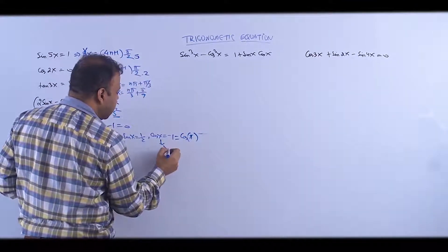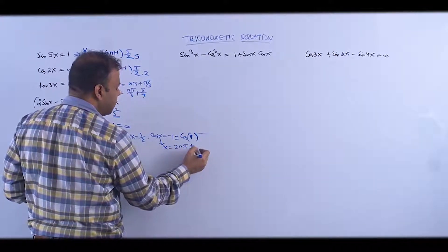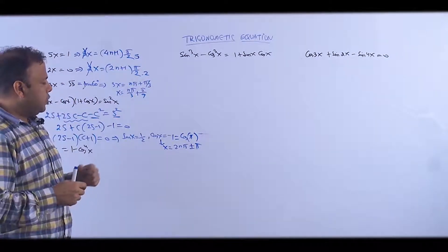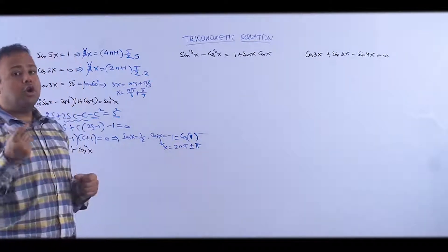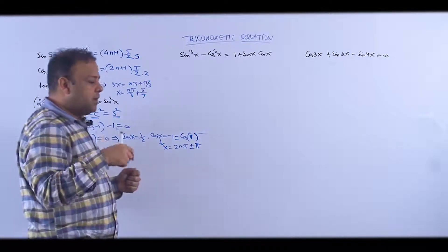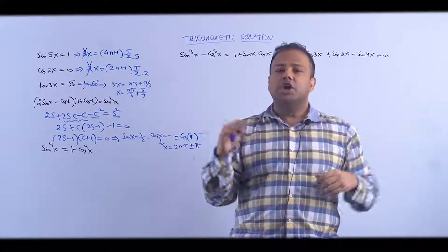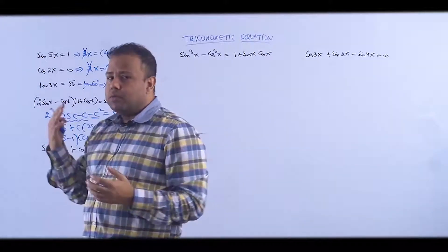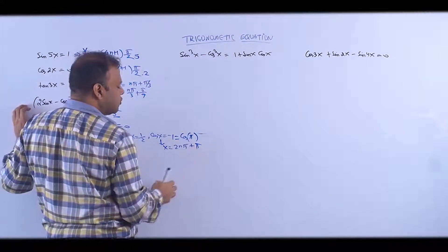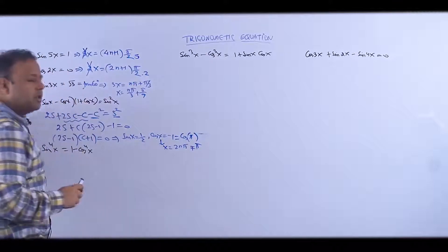So x = 2nπ ± α. Now (2n+1)π and (2n-1)π dono same hote hain — both give all odd multiples of π. So you can write either (2n+1)π or (2n-1)π, whatever you want.